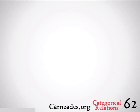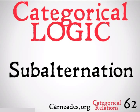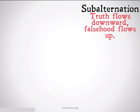Welcome back to 100 Days of Logic with 90 Second Philosophy and Carnetis.org. Today we're continuing with Categorical Logic, looking at the categorical relation of subalternation. Subalternation is the relationship where truth flows in one direction, but falsehood flows in the other direction.